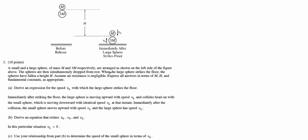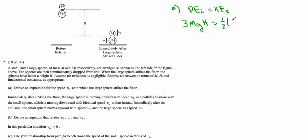Part A: derive the expression for the speed VB for which the large sphere strikes the floor. We are going to analyze this independently of the big M above it — they both fall at the same rate, so they will not interact until after they bounce. We can look at just the 3M mass, using potential energy to kinetic energy: 3MGH equals one half of 3M times VB squared.